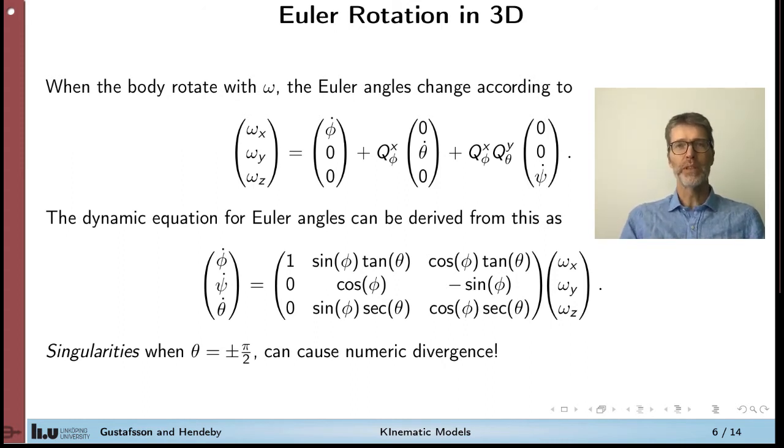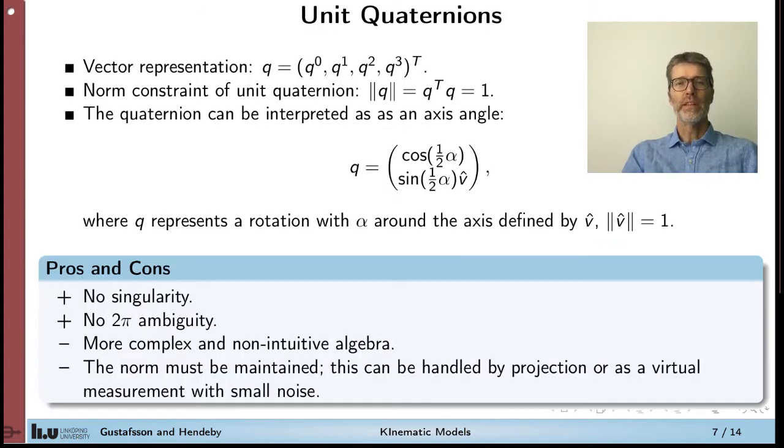Now we have a problem because we have a tangent function here and tangent is not defined when theta is plus minus 90 degrees. If the pitch angle is 90 degrees, we get some kind of infinity in several of the state derivatives. What happens is that yaw is undefined. You can't even define the yaw angle when you have an orientation like this. This is a severe drawback with using Euler angles in the state. That is why you sometimes need quaternions as representation of the orientation.